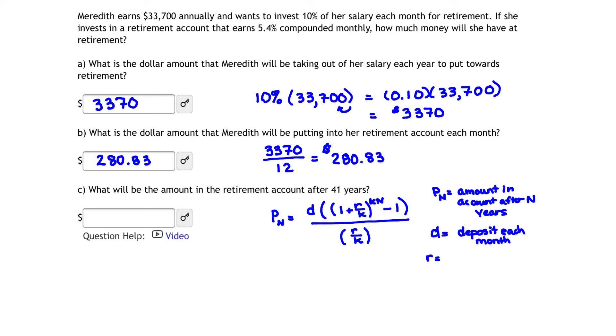R, well, R is our interest rate. K is the amount of compounds per year. And N is our number of years, correct? All right, so let's look at our problem and see if we can identify what each of these variables actually is.